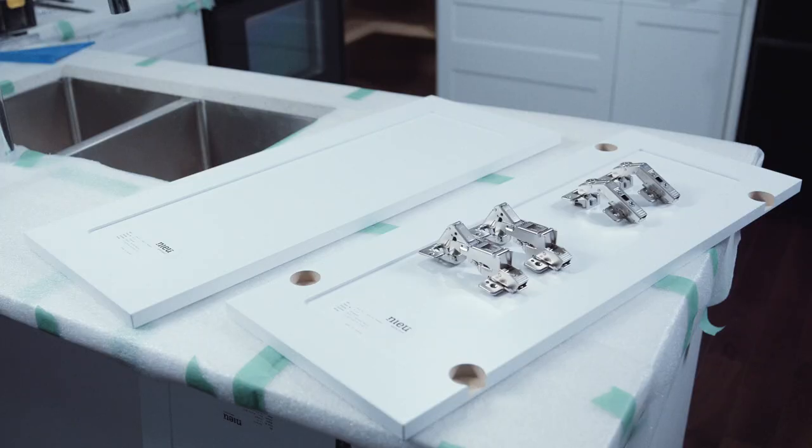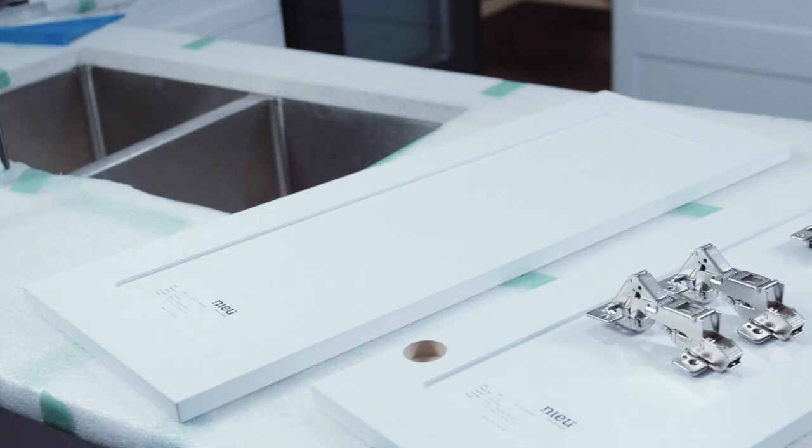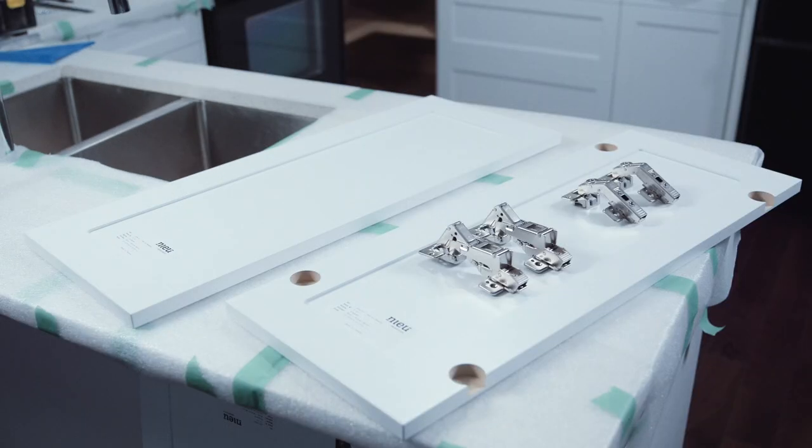Your bifold door set will consist of two doors and four hinges and plates. One of the doors will have four hinge holes while the other door will have none. The door with the four hinge holes is the door that will mount to the corner cabinet.